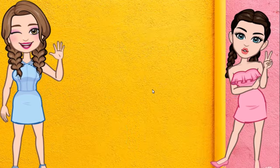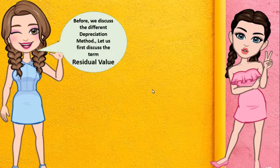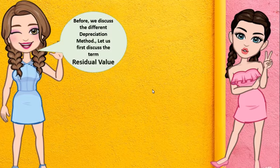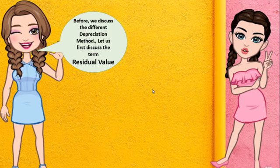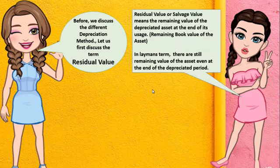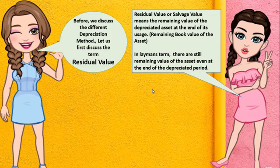Before we discuss the different depreciation methods, let us first discuss the term Residual Value. Residual or salvage value means the remaining value of the asset at the end of its usage — the remaining book value of the asset. In layman's terms, there is still a remaining value of the asset even at the end of the depreciated period.